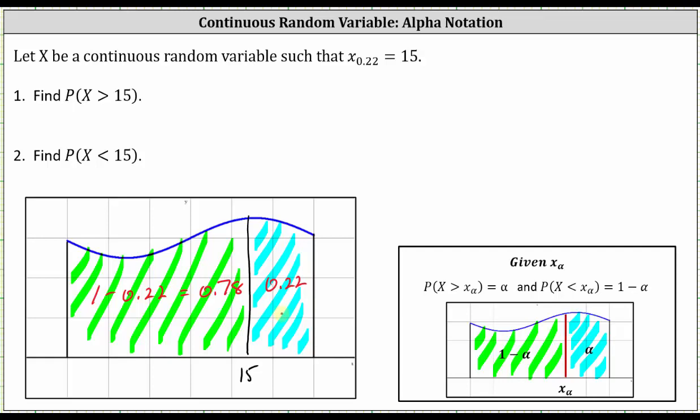Now we're going to use this graph to find the two probabilities. The probability that x is greater than 15 is equal to 0.22, which is the same as the value of alpha, and the probability that x is less than 15 is equal to one minus alpha, which is 0.78.